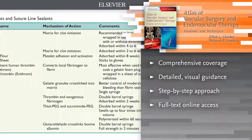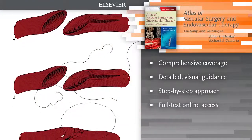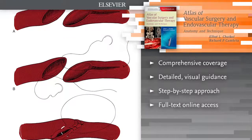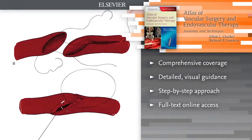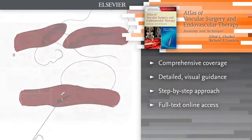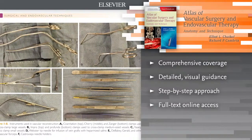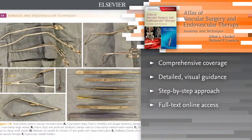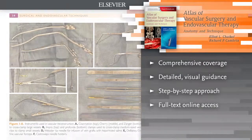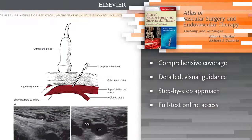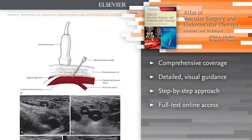This full-color, one-volume Atlas presents over 100 common and complex procedures, including open and endovascular techniques, with an emphasis on anatomy and imaging studies as they apply to each technique. Know what to do and expect with comprehensive coverage of almost every procedure you might need to perform.